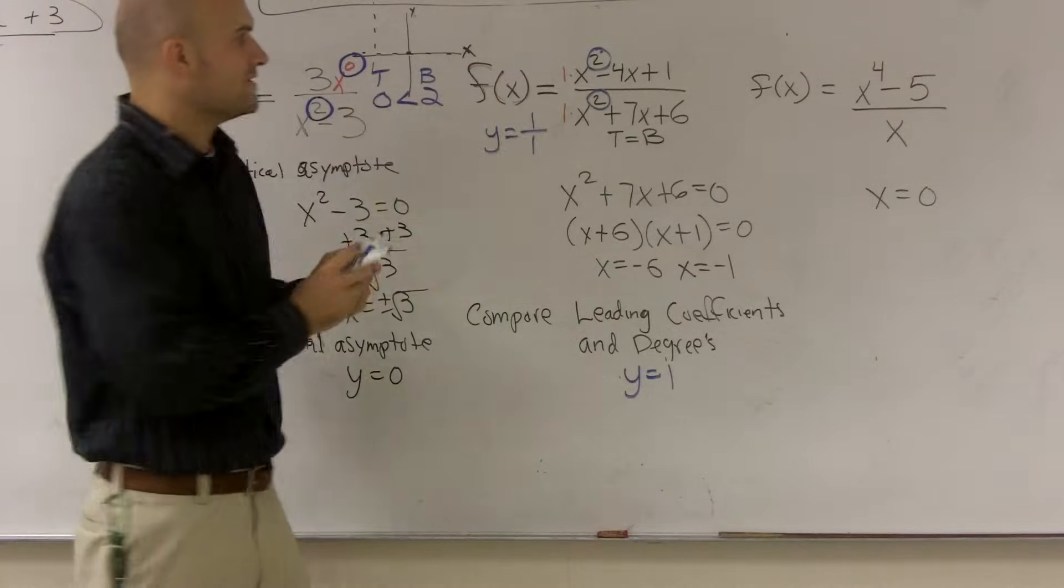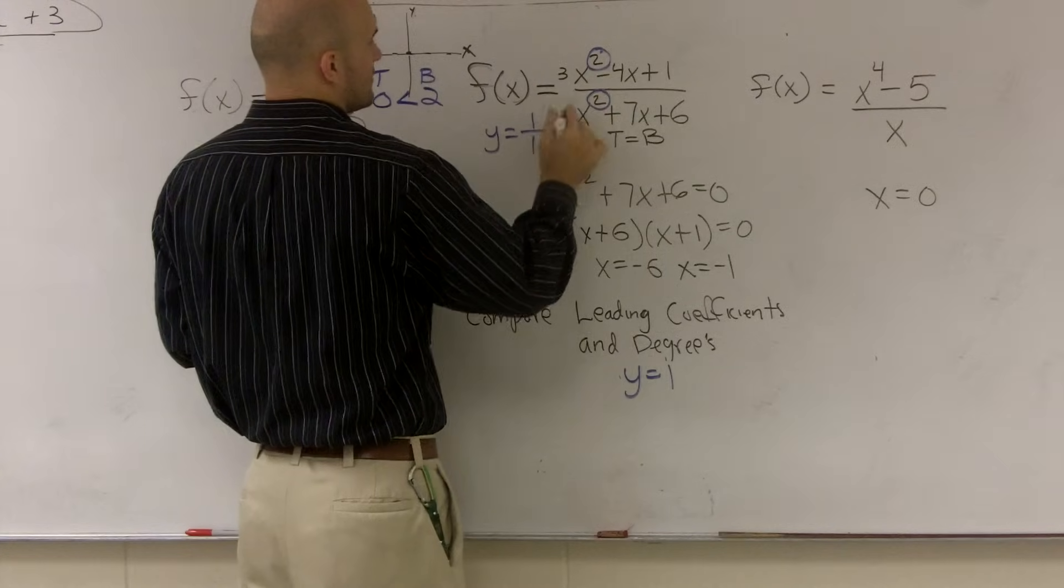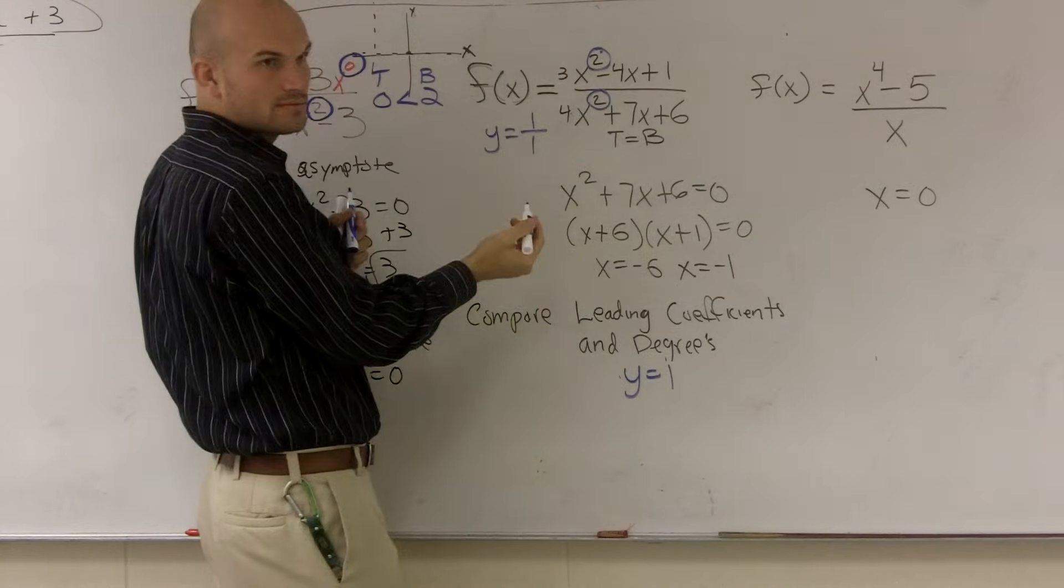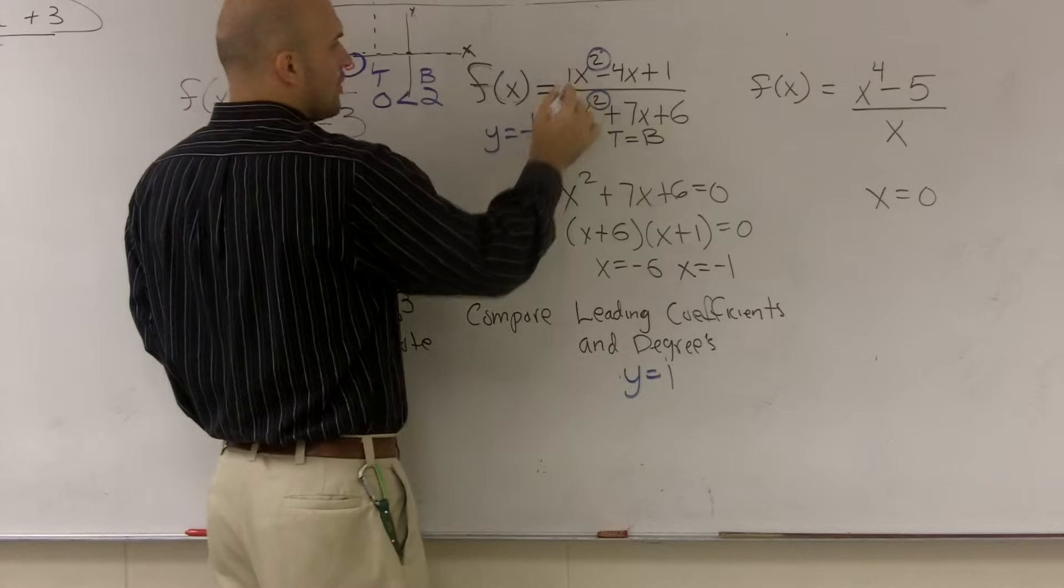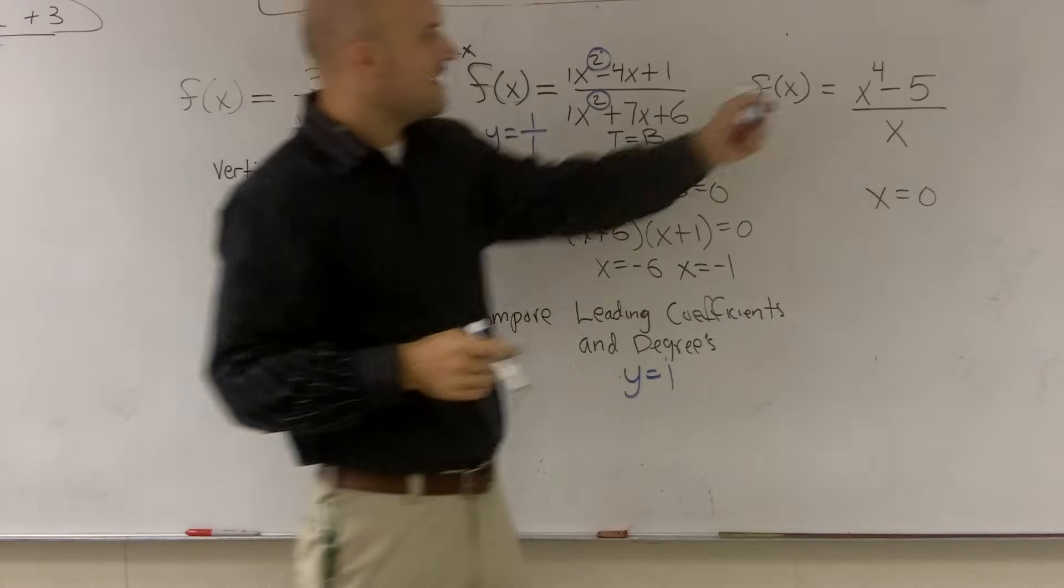So whenever they're equal, if this was like 3 fourths, then it would be 3 fourths. So just always divide the coefficients.